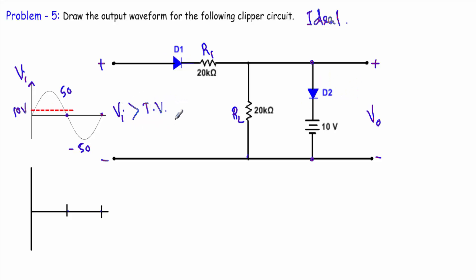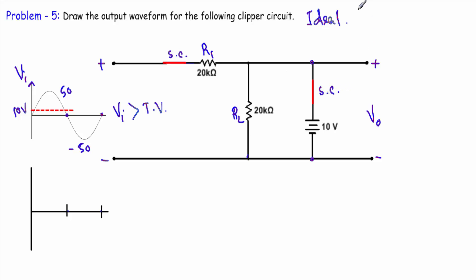Now consider the case when input voltage is greater than the transition voltage. Diode D1 will be in forward bias during the total positive half cycle, and diode D2 will also be in forward bias. I can replace both with short circuits. You will see that we are taking the output across the terminals of the 10 volt voltage source. Therefore, when the input voltage is greater than 10 volt, our output voltage will be fixed at a value of 10 volt.